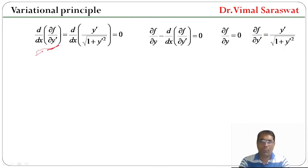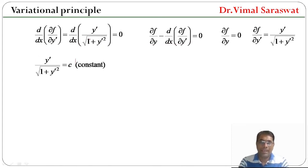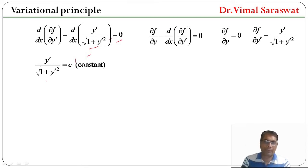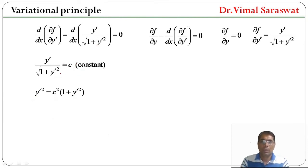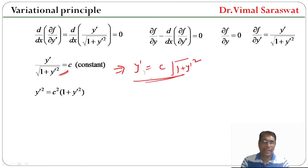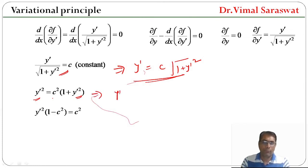So d/dx(∂F/∂y') = d/dx(y' / √(1 + y'²)) = 0. Since the derivative of this quantity is zero, it must be constant: y' / √(1 + y'²) = c. Cross-multiplying and squaring gives y'² = c²(1 + y'²), which expands to y'² = c² + c²y'².